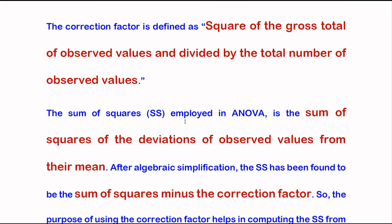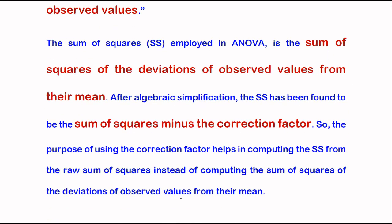The sum of squares employed in ANOVA is the sum of squares of deviation of observed values from their mean. After algebraic simplification, sum of squares has been found to be sum of squares minus the correction factor. So the purpose of using correction factor helps in computing the sum of squares from raw sum of squares, instead of computing sum of squares from deviation of observed value from mean.